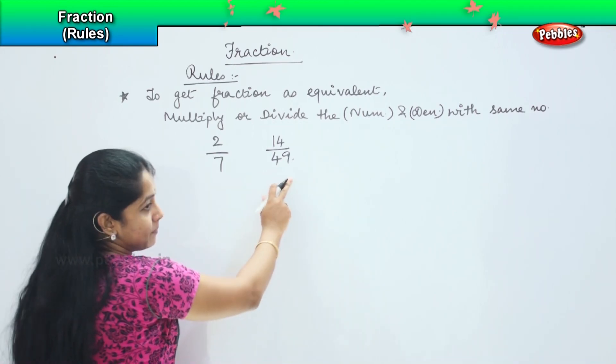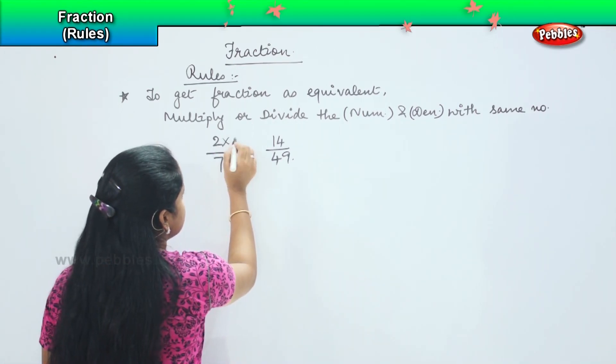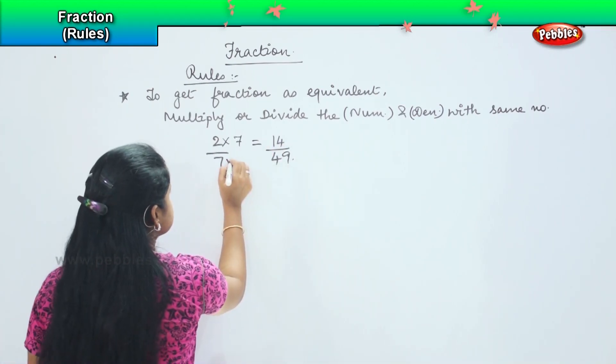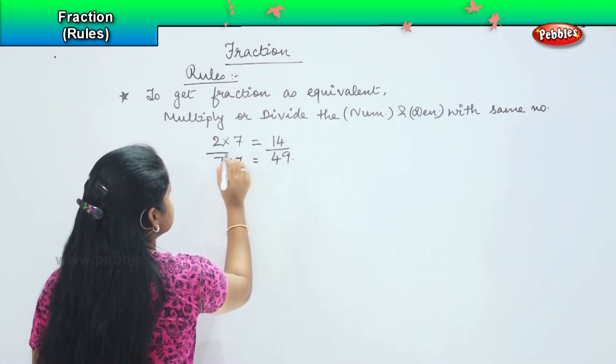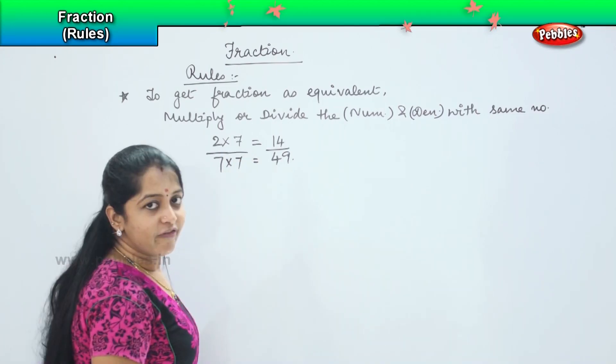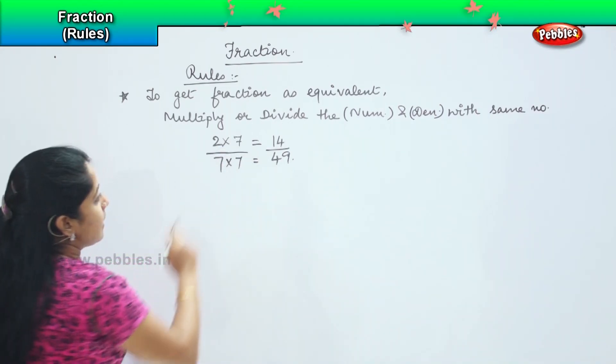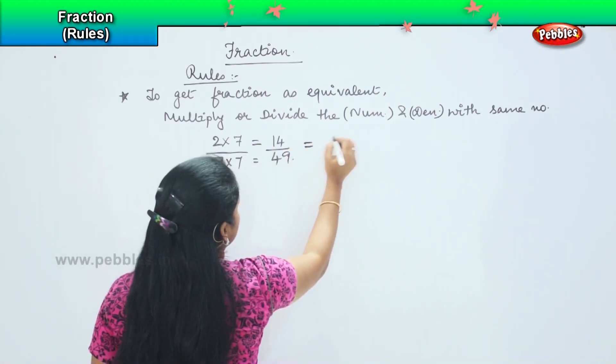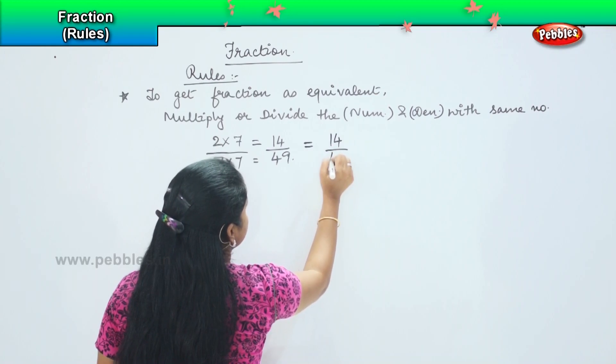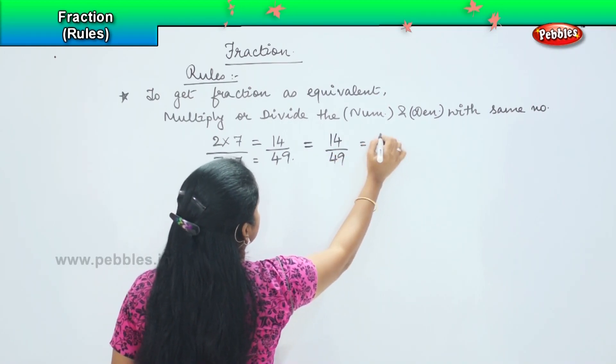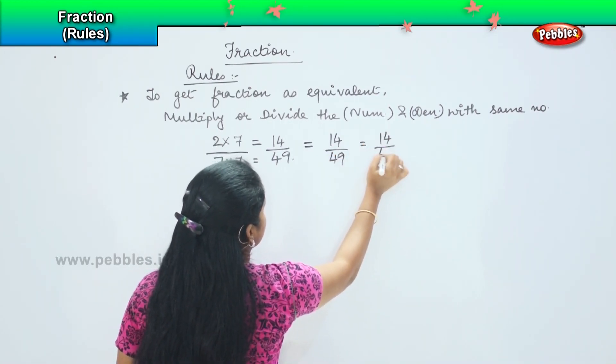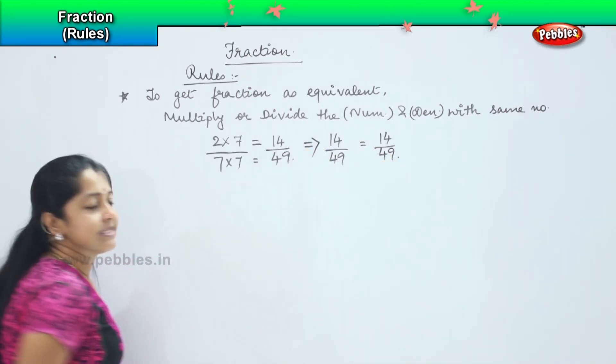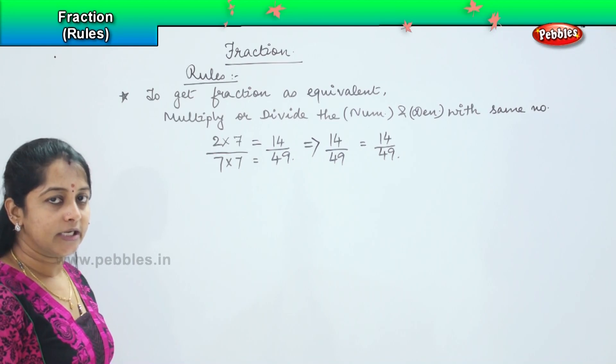If I see the pattern, 2 into 7 is 14 and 7 into 7 is 49. So if I multiply the numerator and denominator with the same number 7, the number given will become same. 14 by 49 will be equal to 14 by 49. So this is the first rule. Clear?